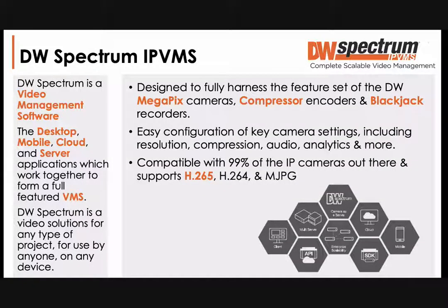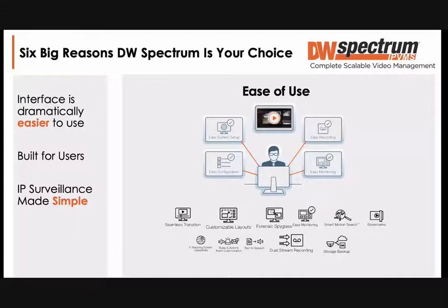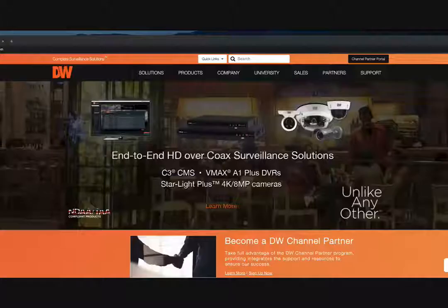DW Spectrum is part of a complete solution with Megapix cameras, encoder compressors to bring existing analog infrastructure into Spectrum, and Blackjack NVRs scalable for a variety of sizes. There are six big reasons to use Spectrum, including an interface that is dramatically easier to use, built for users, and with surveillance made simple. For those unfamiliar with DW Spectrum, let's jump into one of our demo systems.